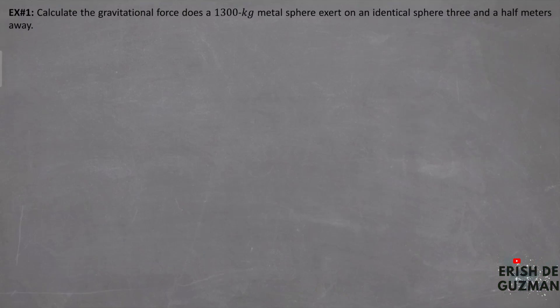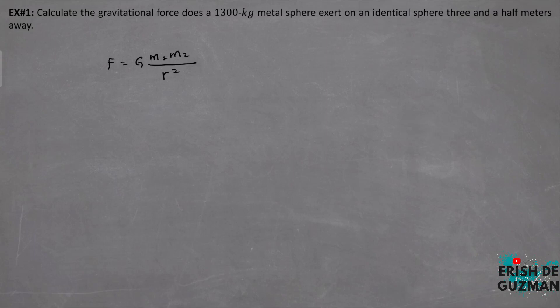Example number 1: Calculate the gravitational force that a 1,300 kg metal sphere exerts on an identical sphere 3.5 meters away. To calculate the gravitational force using the formula of the law of universal gravitation: F equals G times M1 times M2 over r squared. Given one mass of 1,300 kg — and since the problem says identical sphere, M2 is also 1,300 kg. The distance r is 3.5 meters.